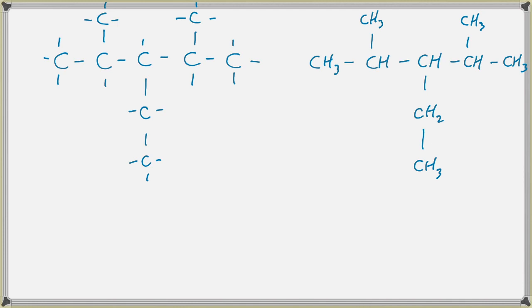Now the line diagram for this would be five carbons. So one, two, three, four, five. I have a methyl branch on two and four. And then I have an ethyl branch coming off of three. So that's how I would draw that as a line diagram.